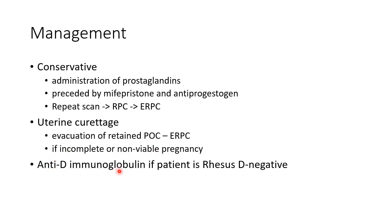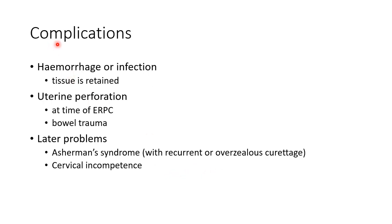Anti-D immunoglobulin should be given if the patient is Rh negative. Now let us see about the complications of miscarriage or abortion. Hemorrhage or infection can occur if there is retained tissue. Uterine perforation and bowel trauma can occur at the time of evacuation of retained products of conception. Later problems include Asherman syndrome and cervical incompetence. Asherman syndrome can occur with recurrent or overzealous curettage.